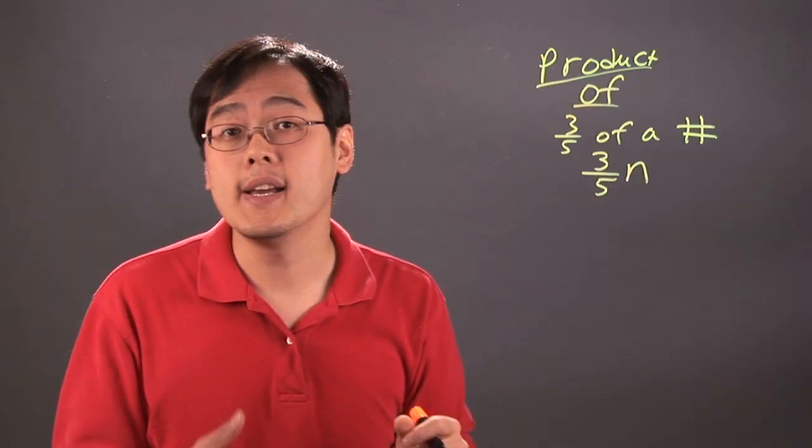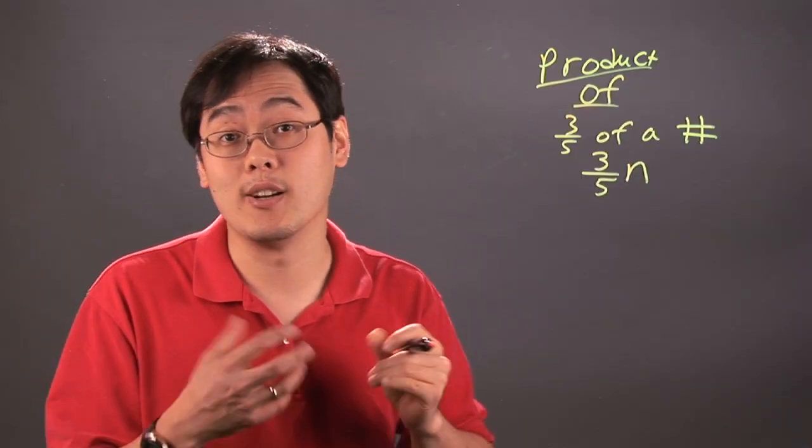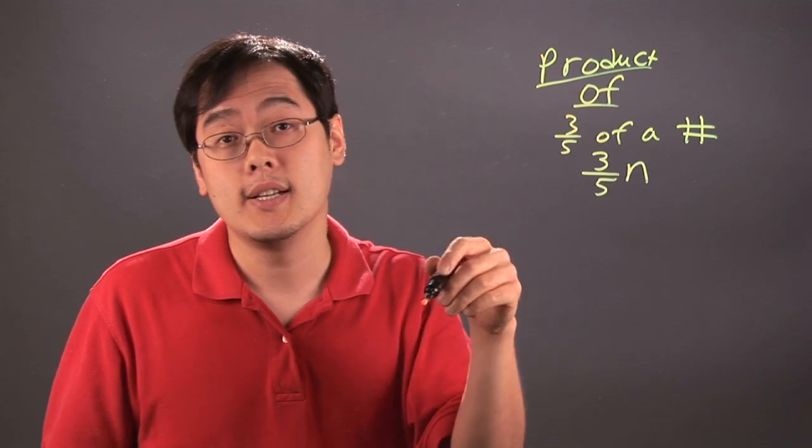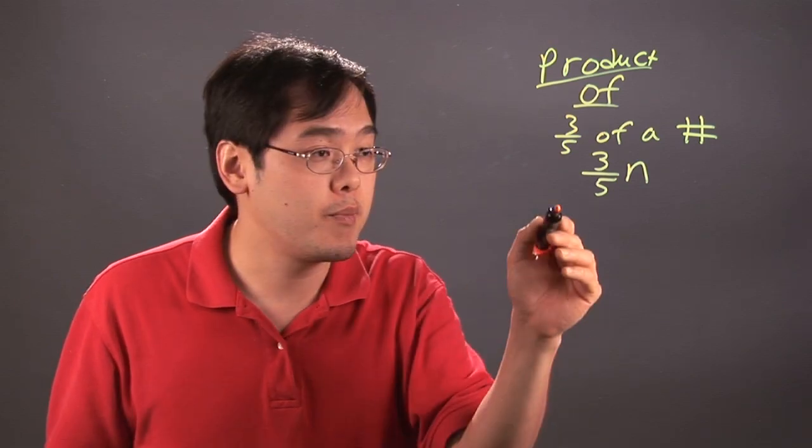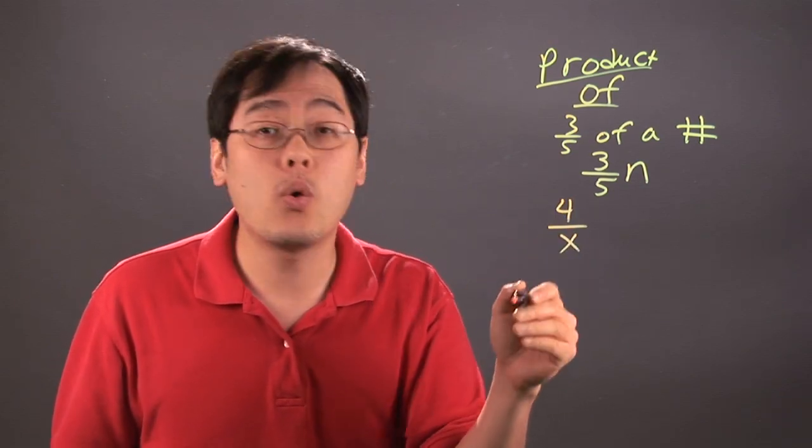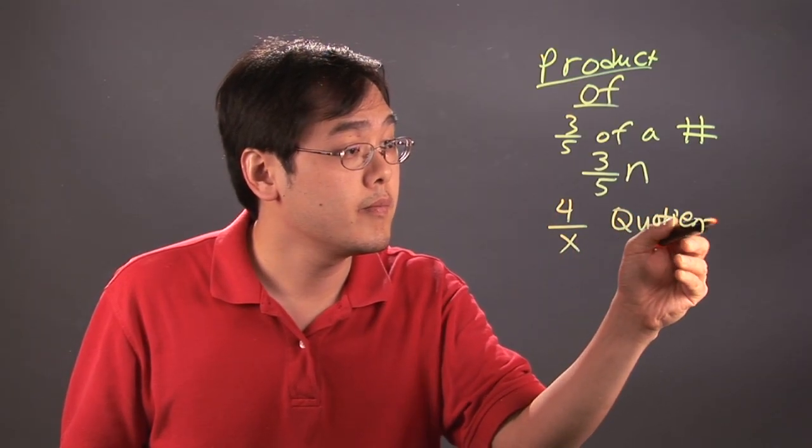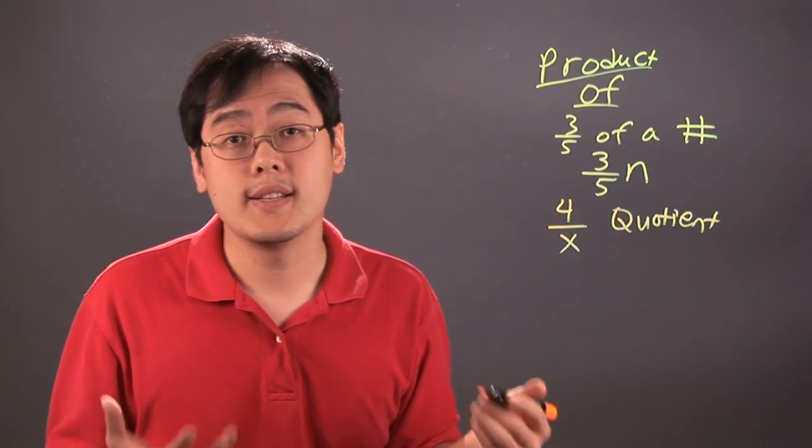Now, when it comes to divide, they pretty much would have to tell you kind of straight out in terms of division. They can say four divided by a number, be four divided by x, or they might use the word quotient to indicate to divide.